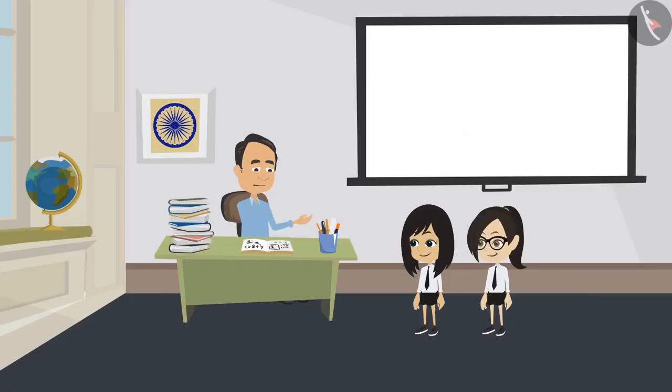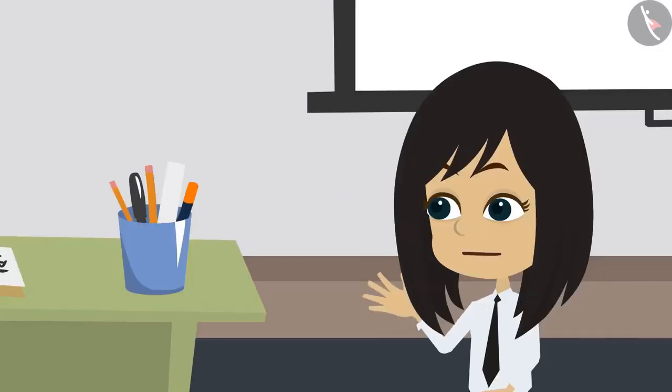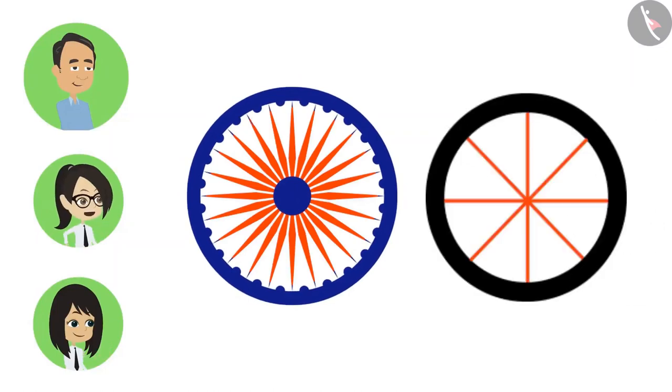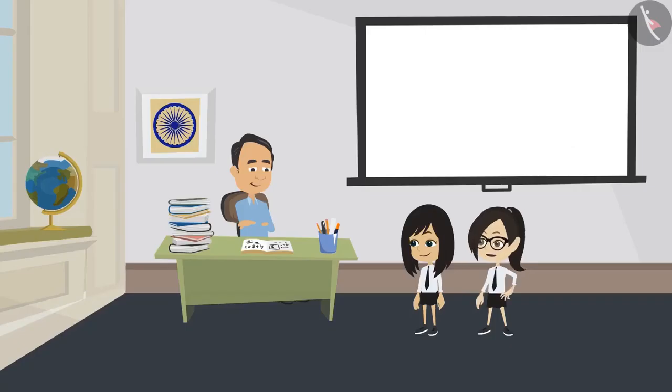Absolutely correct. Like this, there can be several radius in one circle. Like in the Ashok Chakra. And also in the wheel of our bicycle. Now I understand, sir.